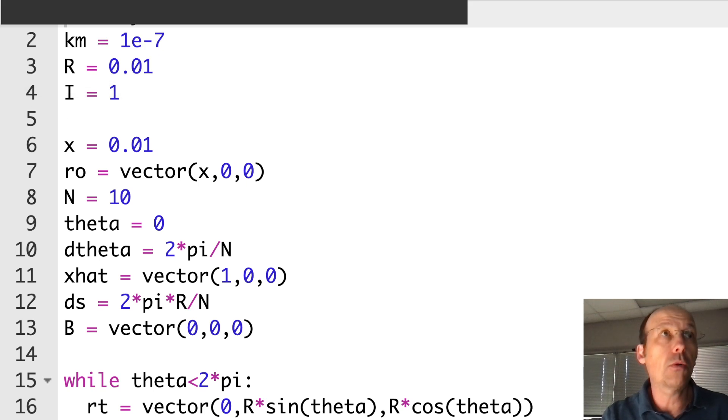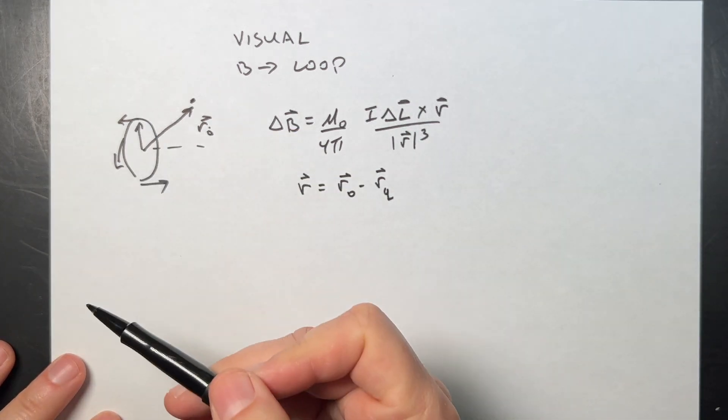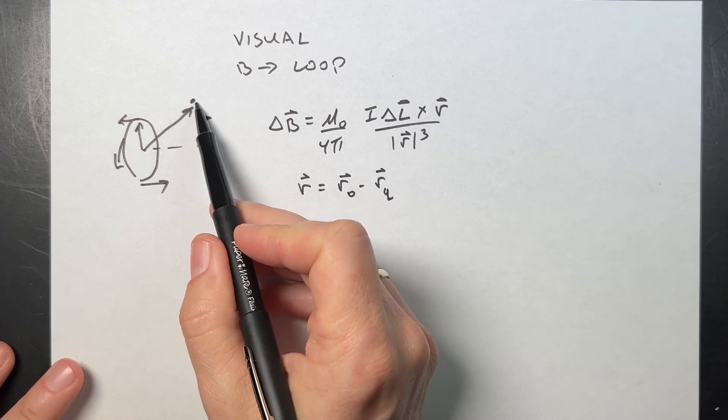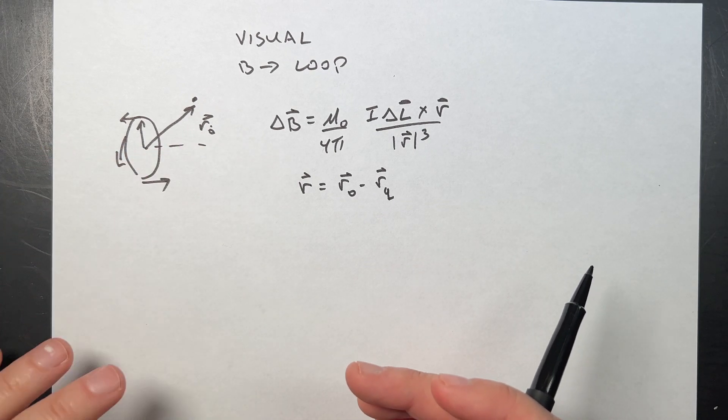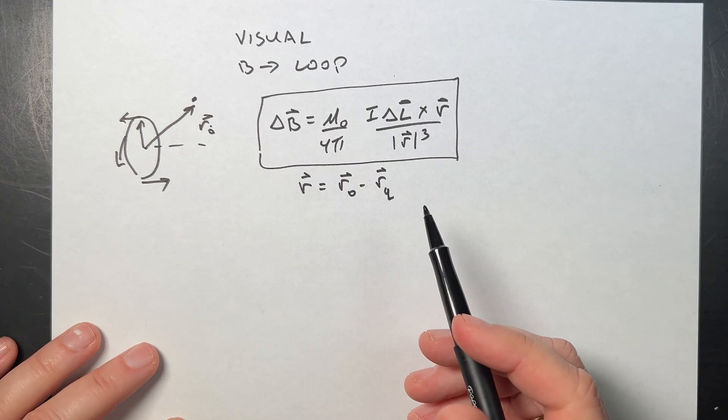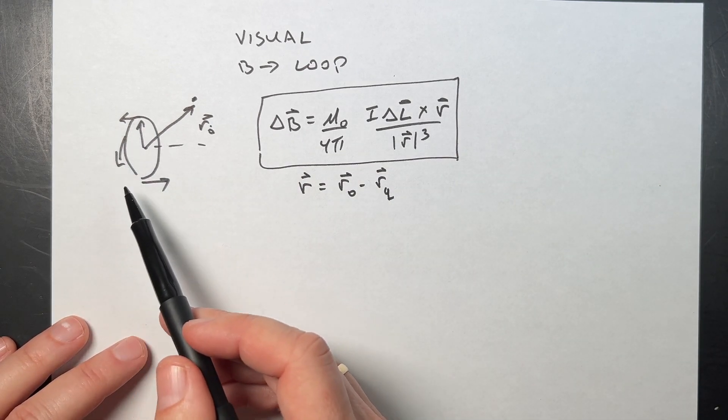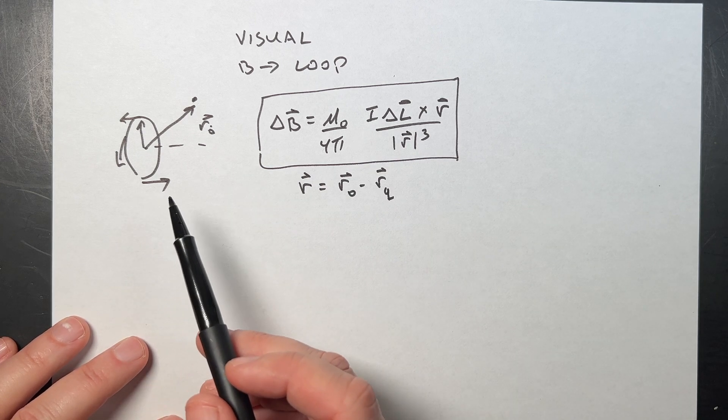Let's start with the code that I had from before. Let me switch over to the paper just to briefly make sure we're all on the same page on how the original code works, then we're going to modify it to make that visualization. This is a loop of current. I want to find the magnetic field at this point. We did it on the axis of the ring, but we want to do it for anywhere.